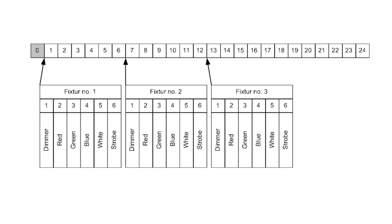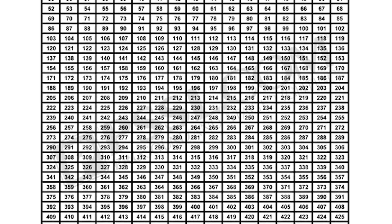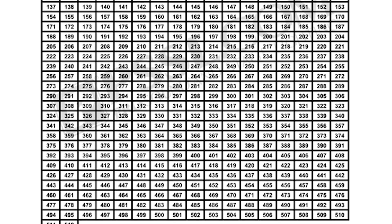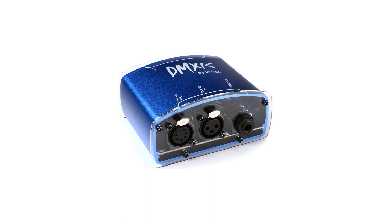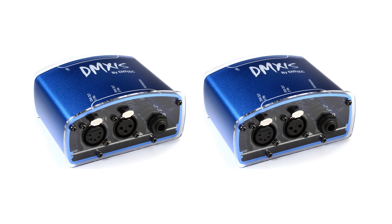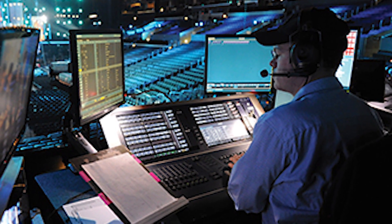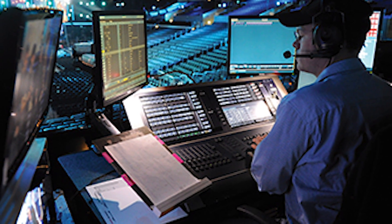Each DMX address and channel amount is different according to the light or fixture you're using, and each channel affects a different parameter of the light or fixture found within that address. DMX addresses must be set so that no lights have overlapping channels. This process can be repeated with as many lights as you want until you hit 512 control channels, at which point you'll need a multi-channel or secondary DMX controller.